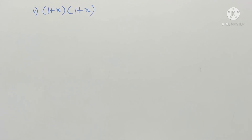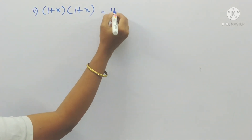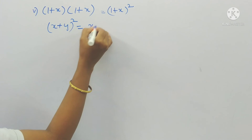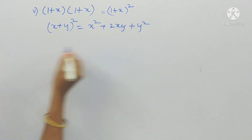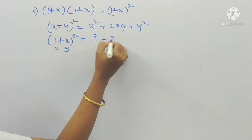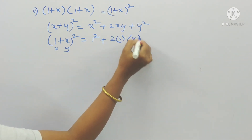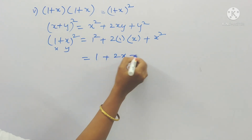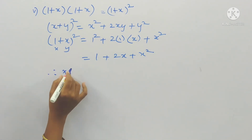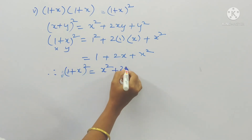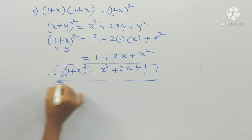Fifth problem: (1 + x)(1 + x). Since the bases are equal, the powers are added, giving (1 + x)². This is in the form of (x + y)², whose formula is x² + 2xy + y². Here x = 1 and y = x, so we get 1² + 2·1·x + x² = 1 + 2x + x². Writing in decreasing order of degree: x² + 2x + 1.